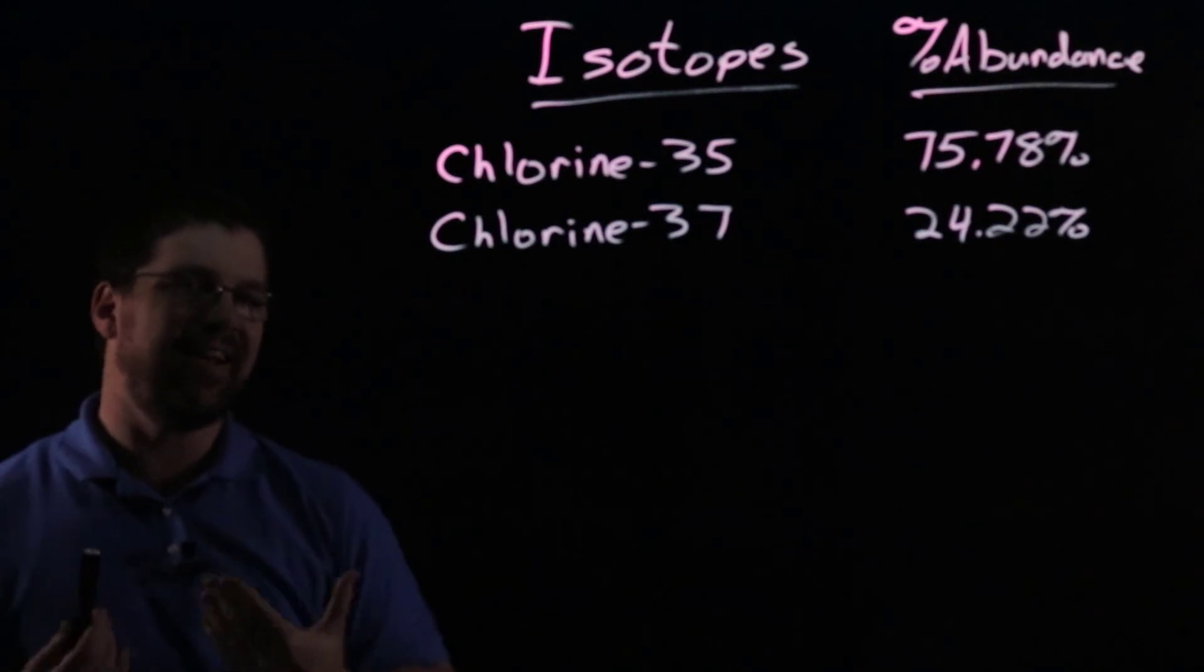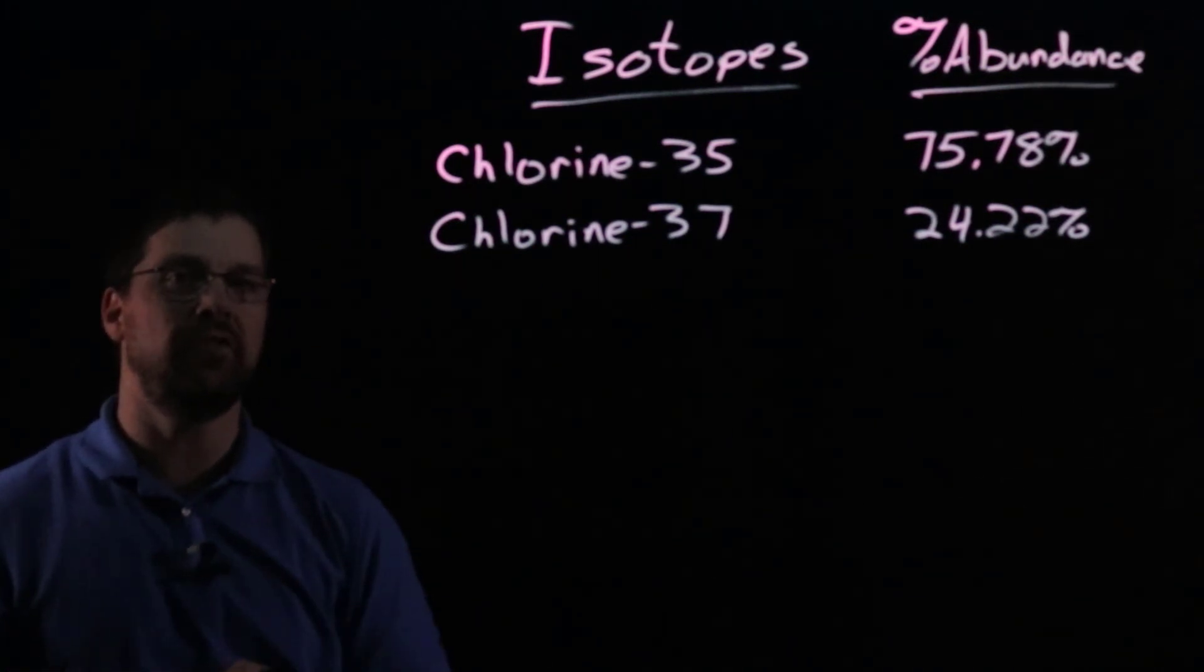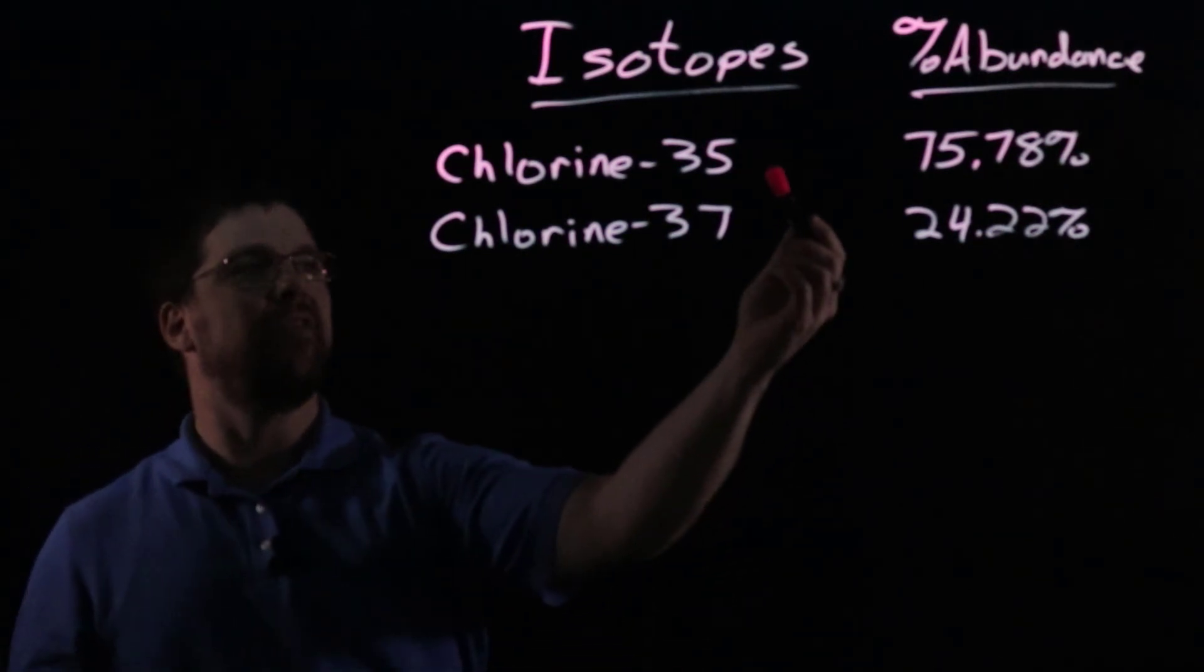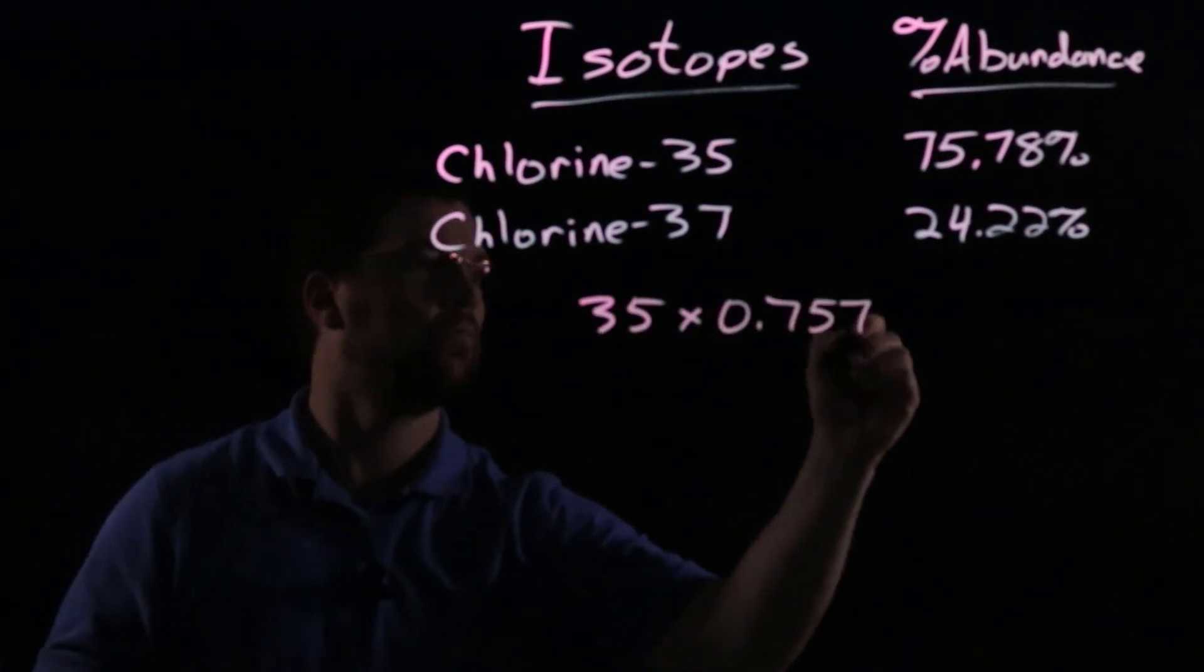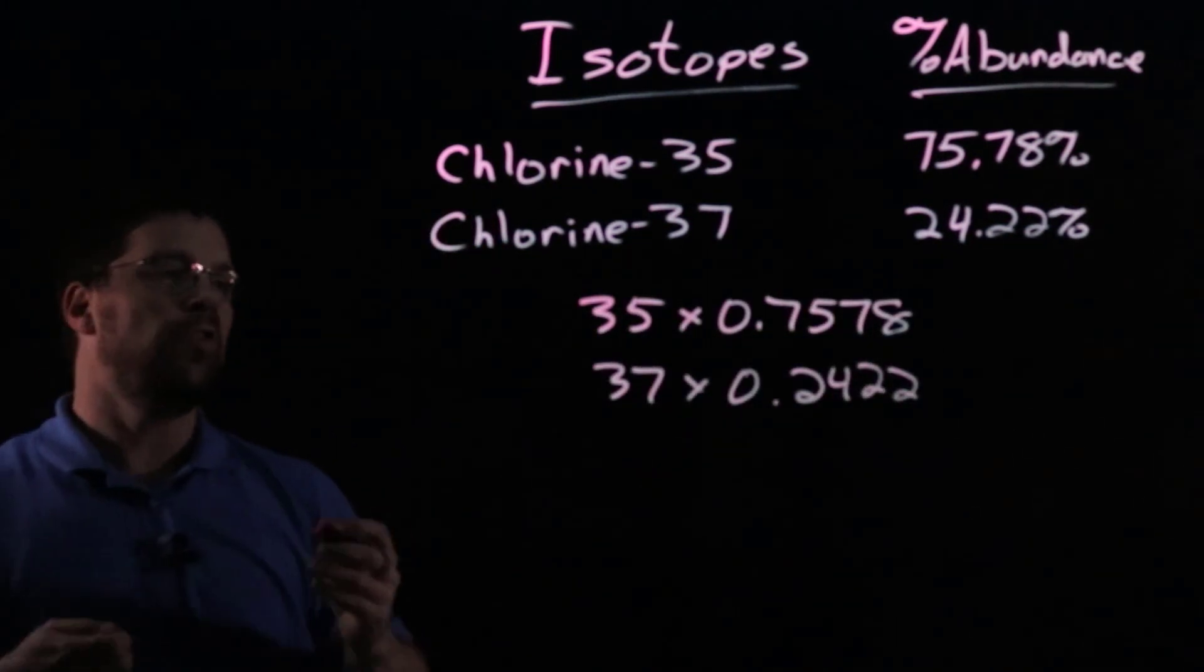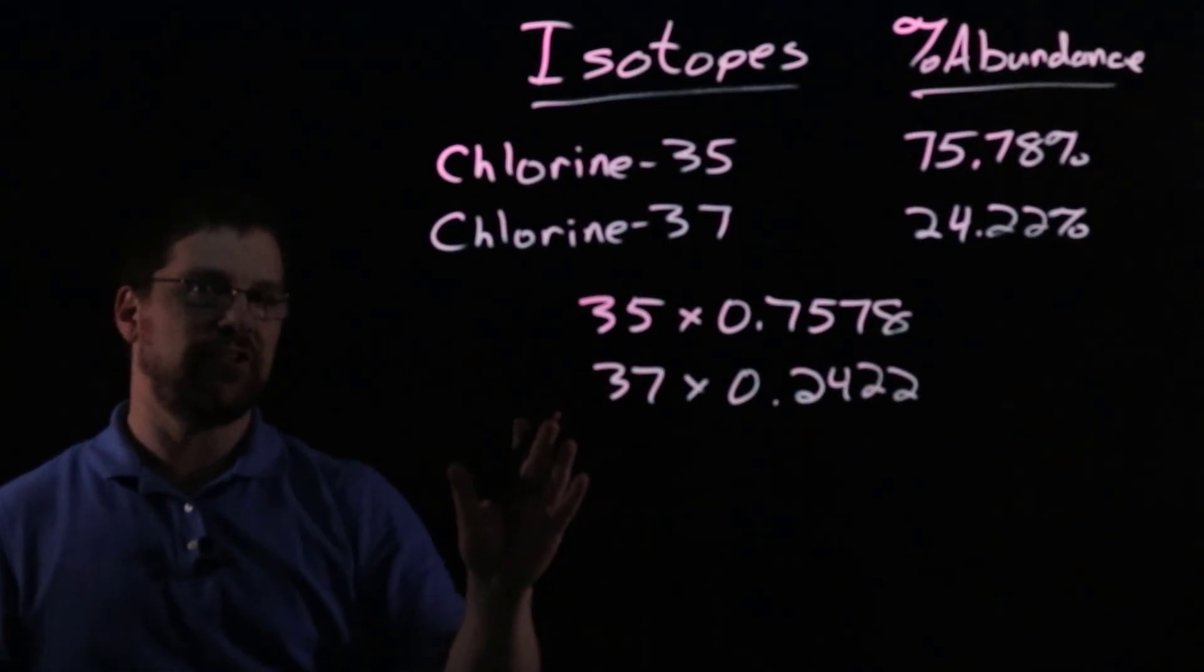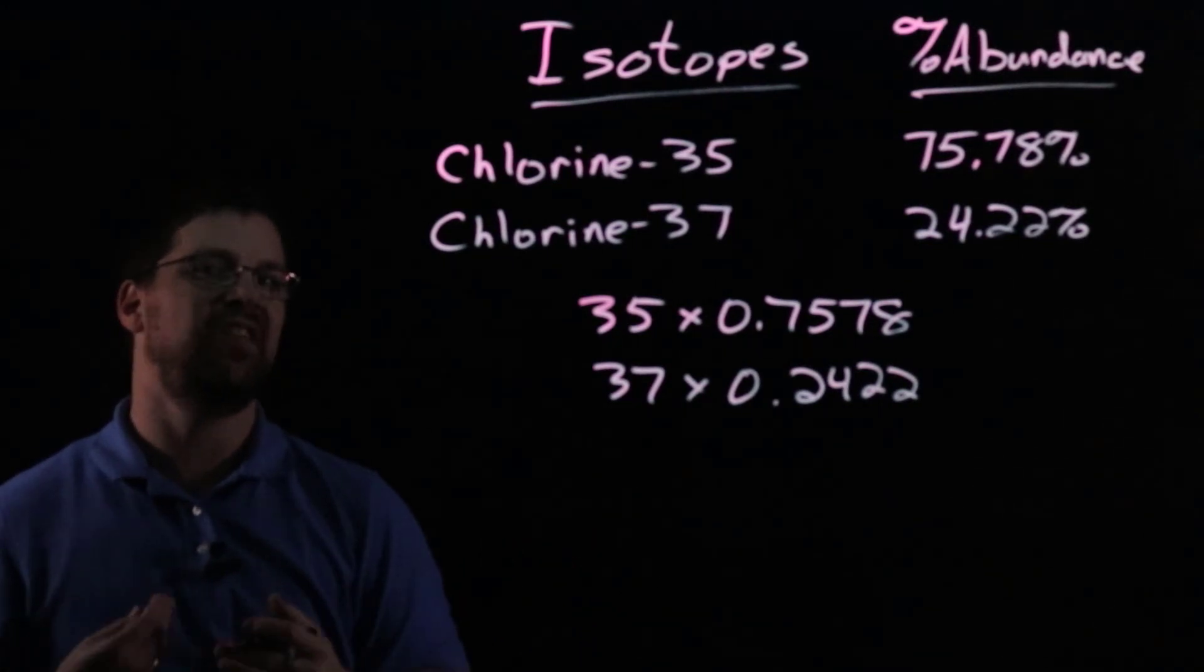Now, as far as getting the actual 35.45, the process that we need to do to get that involves for each isotope, taking the mass of that isotope times its percent abundance. Once we set that up, now we need to do the multiplication and those products that we get, we're going to add all of those together,